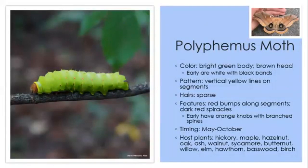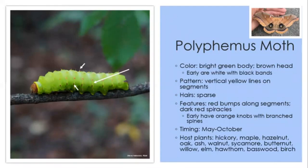First up is the polyphemus moth. The caterpillar is bright green with a brown head and three inches when fully grown, but early instars are white with black bands. You may see faint yellow bands across the segments and sparse hairs. There are also red bumps along the segments and dark red spiracles. Early instars have orange knobs with branched spines, which are reduced to just red spots in later instars. May through October, you can find them on a whole range of native tree species.